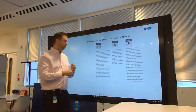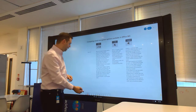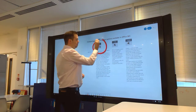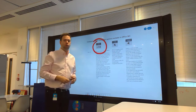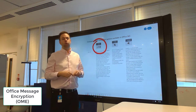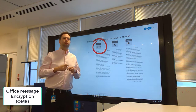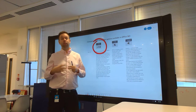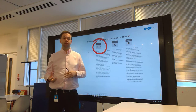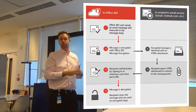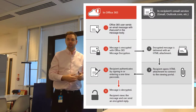However, we do have three different options. The first one is Office Message Encryption, which allows you to encrypt the message and/or the attachment, and be able to send that out to a third party.